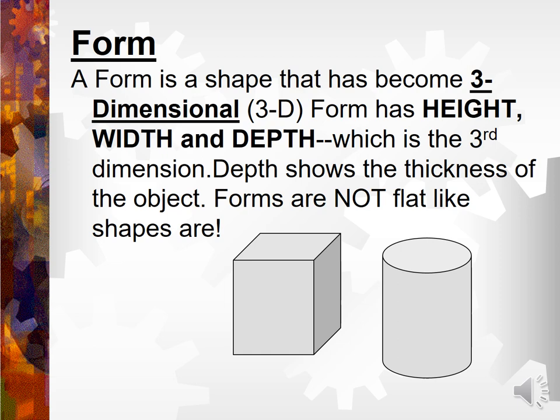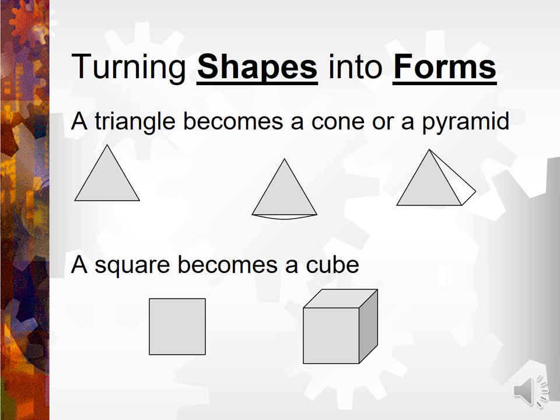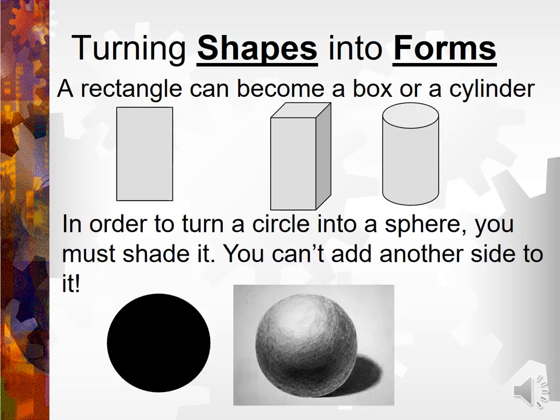And we will learn about form. Form is a shape that has become 3D. Forms are not flat like shapes as seen in pictures. Look here — turning shapes into forms: a triangle becomes a cone, a square becomes a cube, and a rectangle can become a box, and a circle becomes a sphere.